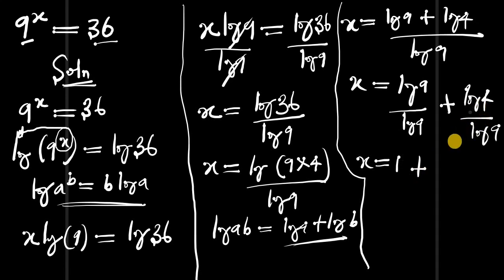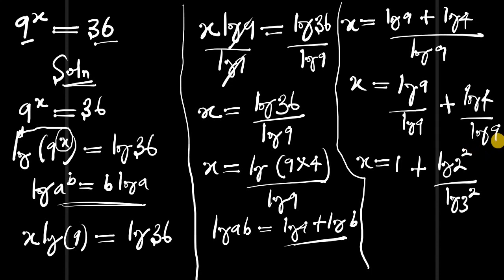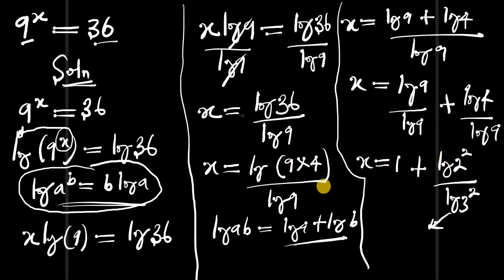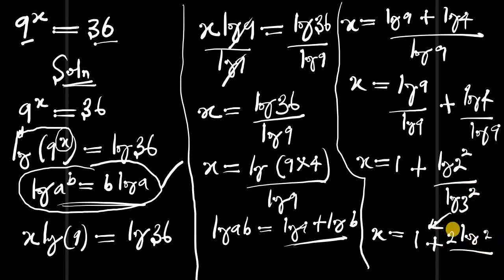We can write log(4) as log(2²) and log(9) as log(3²). Applying the power rule again, the exponents come in front: x = 1 + 2·log(2) / 2·log(3). The 2s cancel, so we are left with x = 1 + log(2) / log(3).